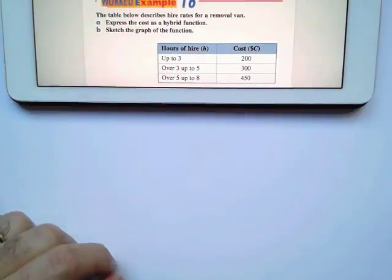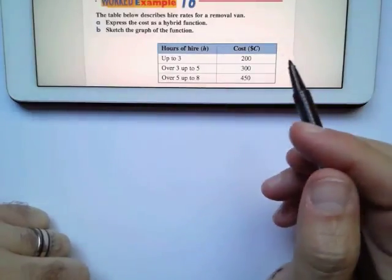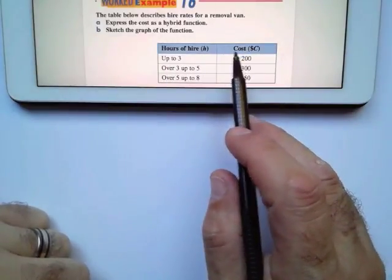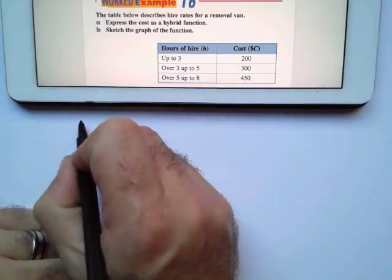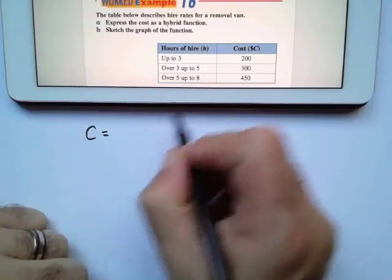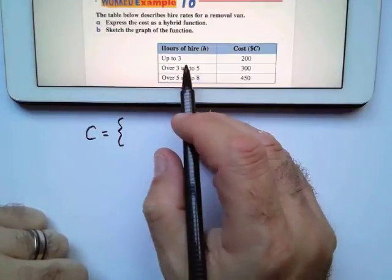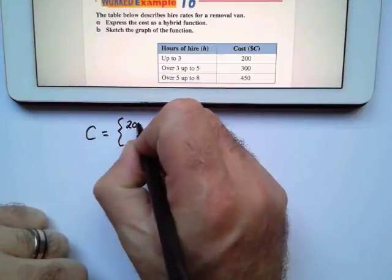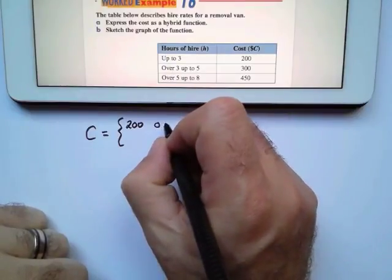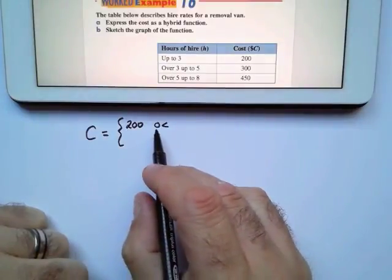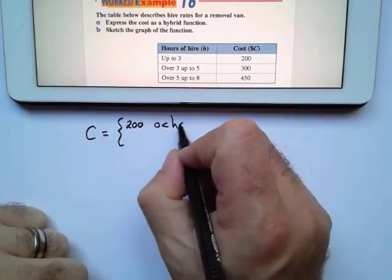So first of all, they say express the cost as a hybrid function. So I know that I need to have the cost C. What is dependent? What is independent? Now, the cost depends on how much or for how long you hire it. So the cost depends on whatever I do with this. Now this is going to be a hybrid function. So when I hire it for up to three hours, it's going to cost me $200. When is this going to happen? It's going to happen between zero and zero hours. You can't include zero hours, because when you hire it for zero hours, you're not going to pay anything. So it's going to be zero hours, up and including to three.